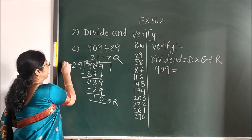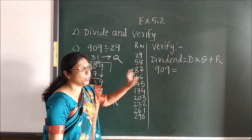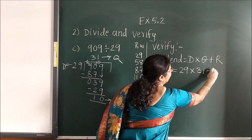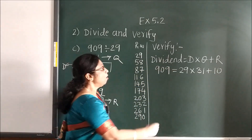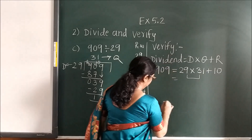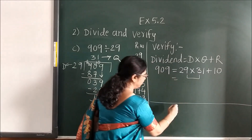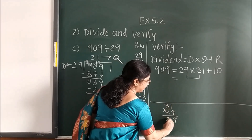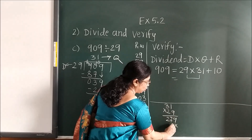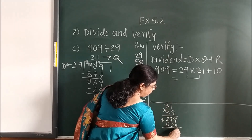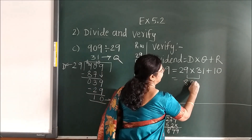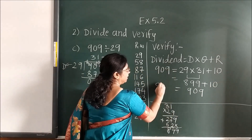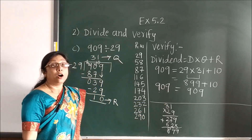Use this to verify. Dividend is 909, divisor is 29, quotient is 31, remainder is 10. Multiply 31 by 29: 9 ones are 9, 9 threes are 27. Then 2 ones are 2, 2 threes are 6. When you add: 8, 9, 9. Write 899 plus 10 — you get 909. Left hand side is equal to right hand side.